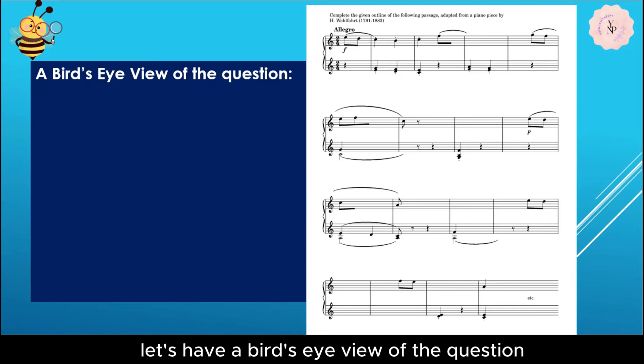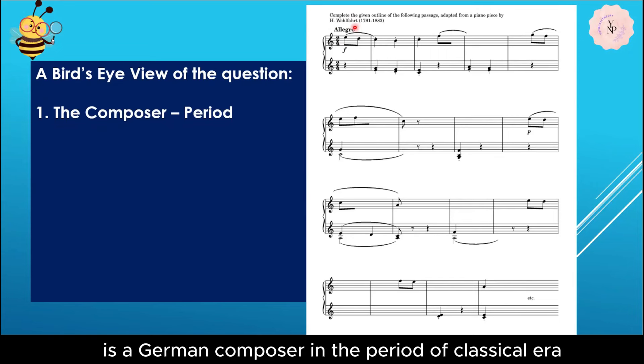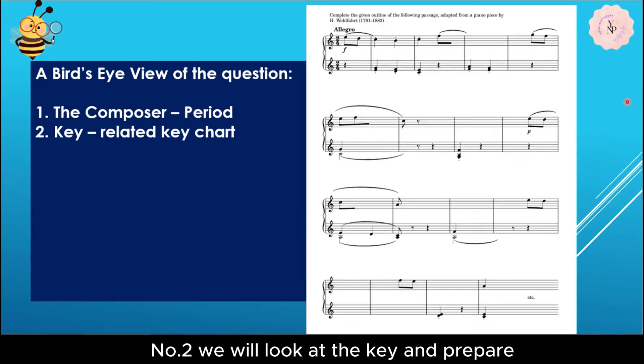First of all, let's have a bird's eye view of the question. Number one, the composer Wolpert is a German composer in the period of Classical era, 1791 to 1883. Number two, we will look at the key and prepare for the related key chart. Without any sharp or flat, we affirm that this is either C major or A minor.